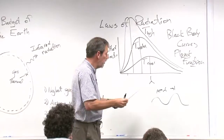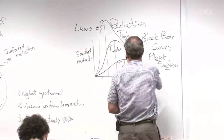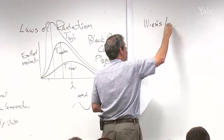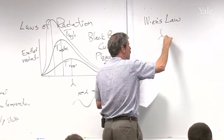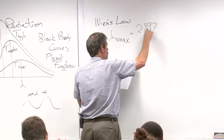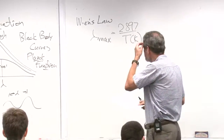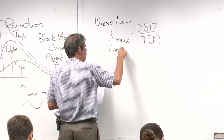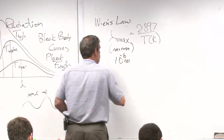There are names for these particular aspects of the radiation law. The shift in the peak is referred to as Wien's Law, given by the following formula: lambda max equals a constant divided by the temperature expressed in Kelvins. This lambda is in units of microns — a micron is 10 to the minus 6 meters.